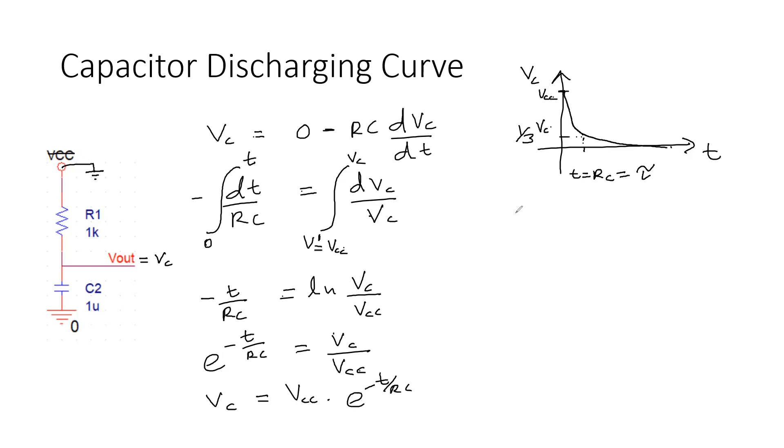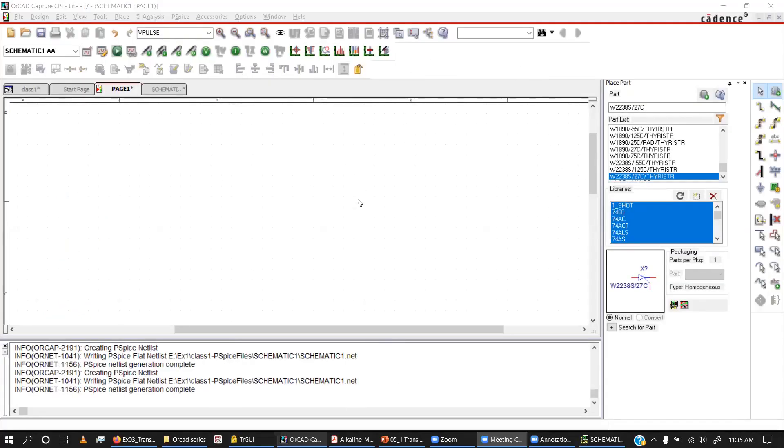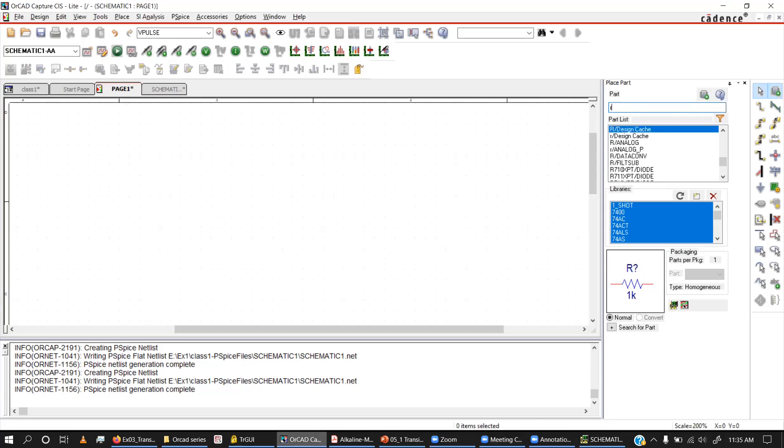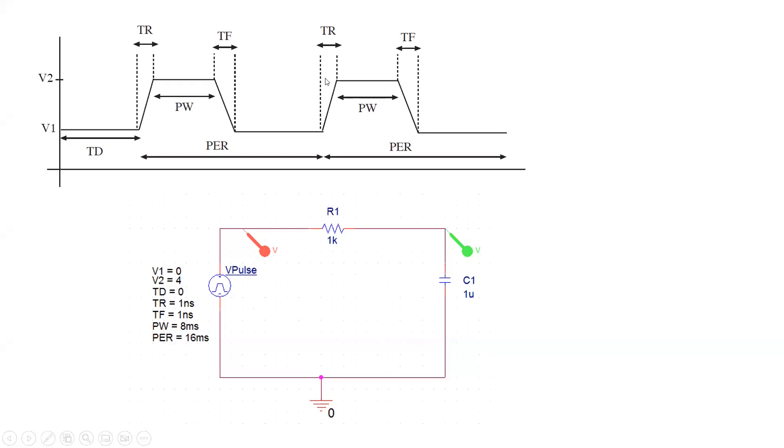Let's try to do a simulation and see whether we can obtain these charging and discharging curves. I've already started a project in Capture CIS and I'm going to place components here. I have all the components but there's one missing part, that's the power supply. For this I'm going to use a special power supply called V pulse, a pulse generator.